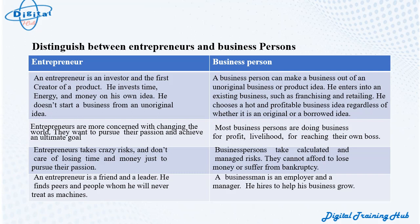Entrepreneurs are more concerned with changing the world — they want to pursue their passion and achieve an ultimate goal. Business persons are mostly doing business for profit, livelihood, or being their own boss. Entrepreneurs take risks and don't care about losing time and money just to pursue their passion, whereas business persons take calculated and managed risks and cannot afford to lose money or suffer from bankruptcy.